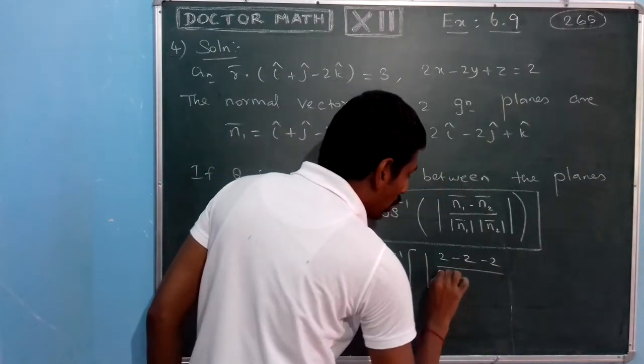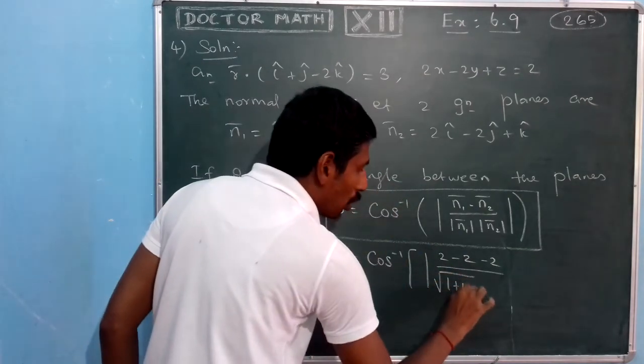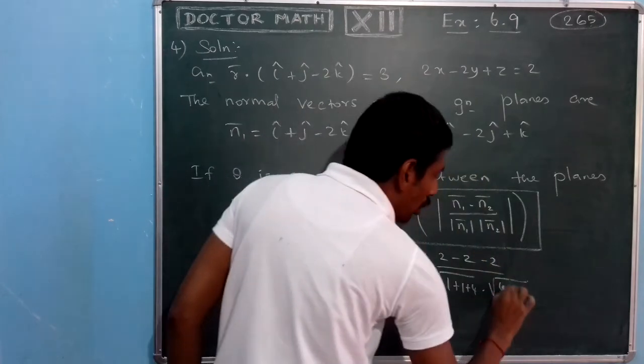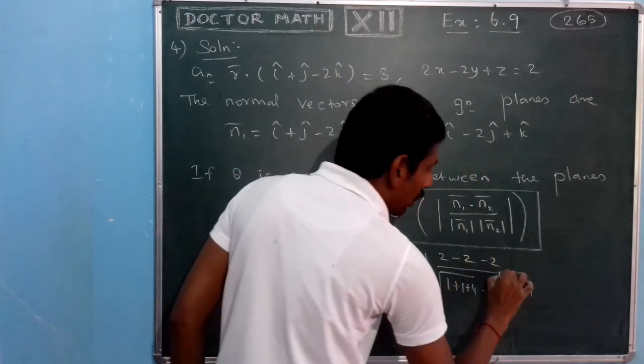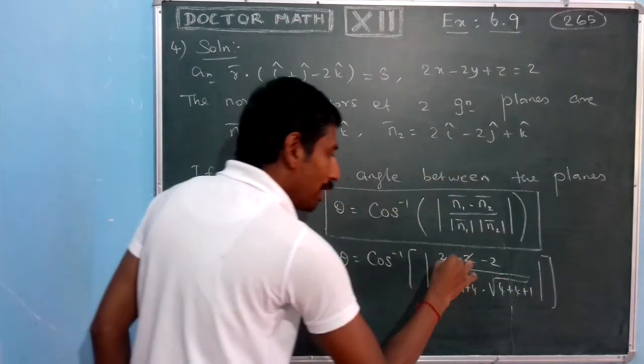Divided by mod, we have 1 plus 1 plus 4, 1 plus 1 plus 4, 4 plus 4 plus 1 square. So the answer, 2 minus 2 minus 2, are in the numerator.